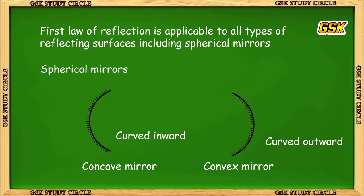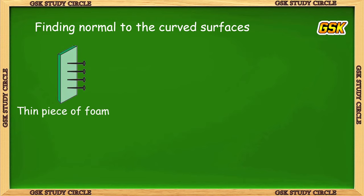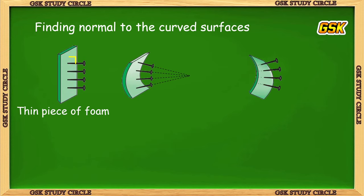Spherical mirrors are of two types: concave mirror and convex mirror. For curved surfaces, drawing normals is important because we measure angle of incidence and angle of reflection relative to the normal. For plain surfaces, normals are simple perpendicular lines. For curved surfaces, we use four pins perpendicular to the surface to find the normal. When the surface is bent inward like a concave mirror, the pins converge and point toward a single point. When bent outward as a convex mirror, the pins diverge from a point.